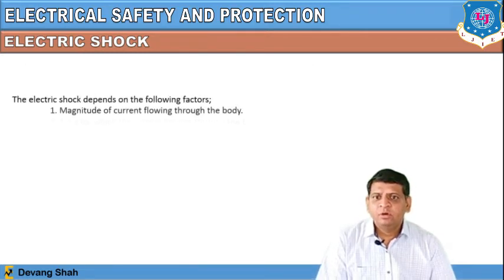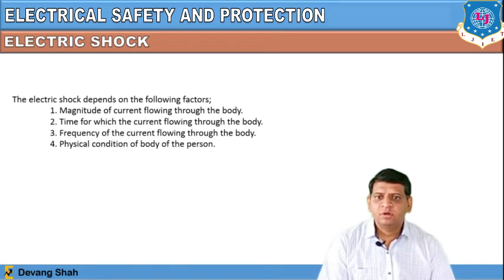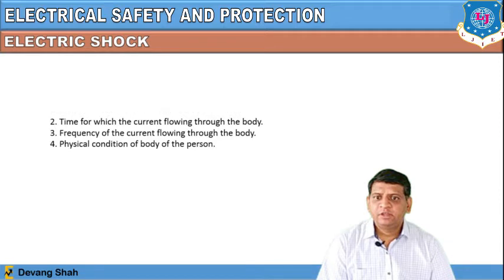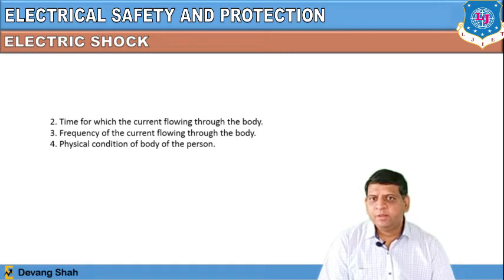Electric shock depends on the following parameters: the magnitude of current flowing through the body, the time for which the current flows through the body, the frequency of the current flowing through the body, and the physical condition of the person.